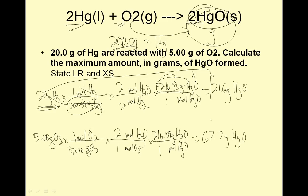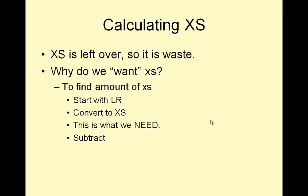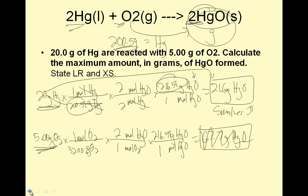Notice I'm doing this problem twice, but what's nice is the annoying molar masses, I get to use them over again. 5 divided by 32 times 2 times 216.59 is 67.7. So, the most 20 grams of mercury can make is 21.6. The most 5 grams of O2 can make is 67.7. I can only make the smaller amount. The smaller answer is correct. It's the limiting reactant and the excess reactant.